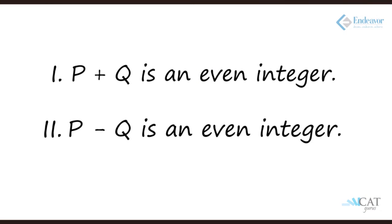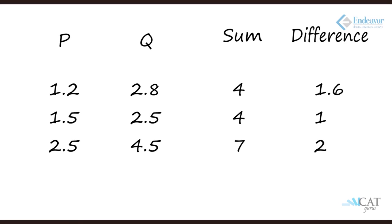Let's have a look when we take both of them together. So p plus q is even and p minus q is even. When is this possible? If I say let's take the decimal case. If p plus q is even and at the same time p minus q is even, then it has to be 0.5 only. Because if it is 1.2 and 1.8 or 1.2 and 2.8, the difference will not be an integer. So it has to be 0.5. So it can be 1.5 and 2.5, or 1.5 and 4.5.